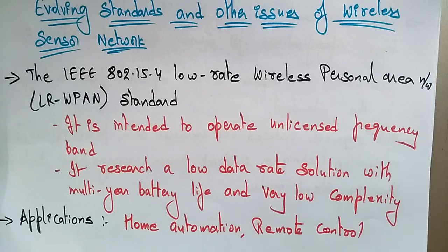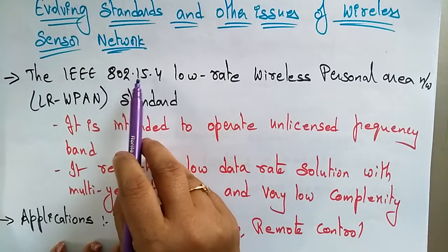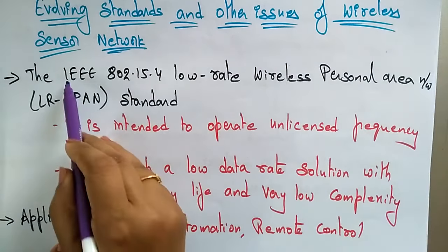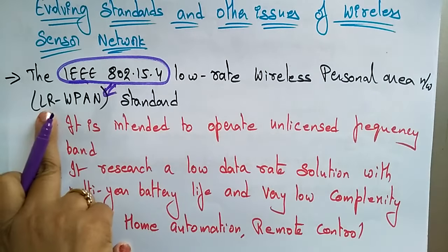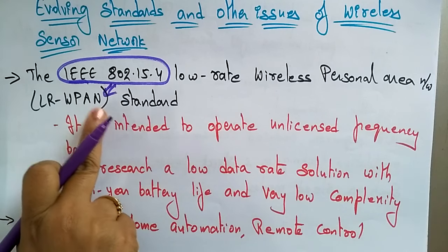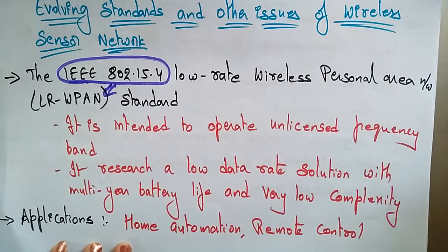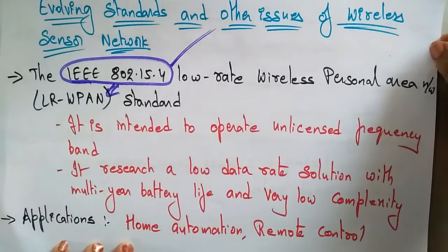The IEEE 802.15.4 is a low-rate wireless personal area network (LR-WPAN) standard. This is the evolving standard for wireless sensor networks. Whenever asked about the evolving standard of wireless sensor networks, the answer is IEEE 802.15.4, which is used for low-rate wireless personal area networks.